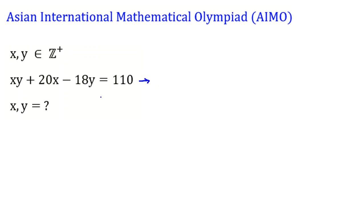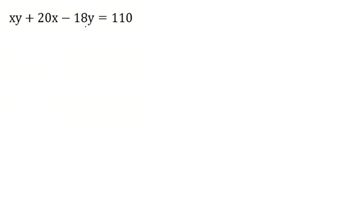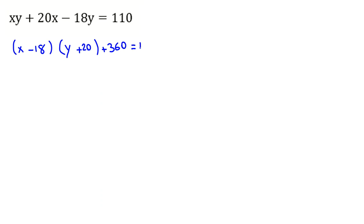So here, if we want to factorize this, the factorizing technique is very useful. We have x times y, then 20x. I place 20 here to create 20x, and negative 18y. But here we have negative 18 times 20, which is 360. Because we have negative, we should add 360 to cancel it. Equal to 110, so if we take this to the right hand side, we can say x minus 18, times y plus 20, equal to 110 minus 360.